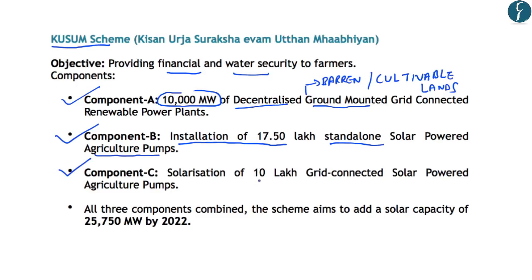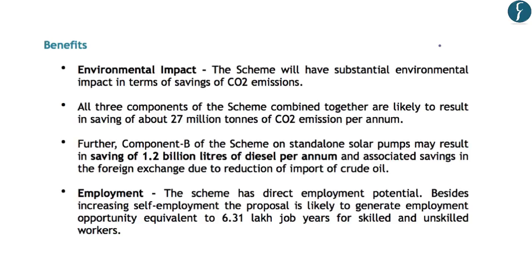The third component includes solarization of 10 lakh grid-connected solar-powered agriculture pumps. Under this, farmers can use generated energy for irrigation needs, and excess energy can be sold to DISCOMs — the electricity distribution companies — providing extra income to farmers. The target of the KUSUM scheme is to add a solar capacity of about 25,750 megawatts of electricity by 2022. Now let us look at the benefits of the KUSUM scheme, which include environmental, economic, and employment-related benefits.